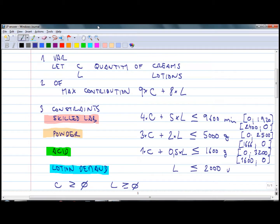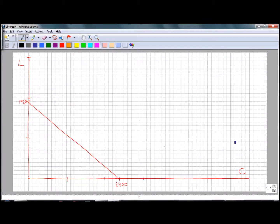Now in a similar way we can put the line for powder. We need to put these two coordinates on the graph. The 1666 should be the C intercept and 2500 intercept with L. Let's connect these two points, and we have a line. This is for powder.